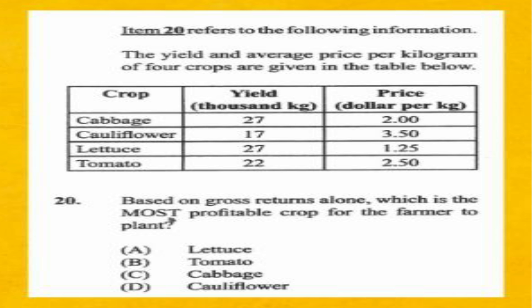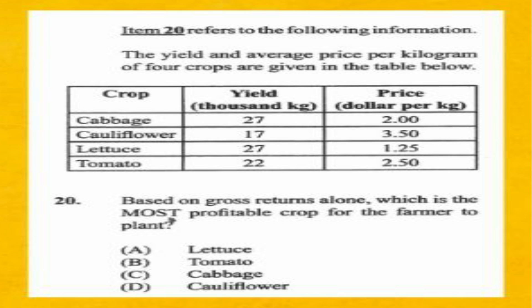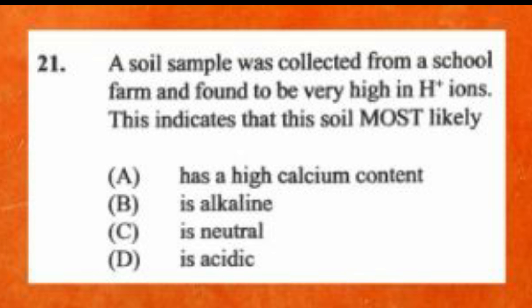Question number nineteen: total income minus total expense — the answer is A, net profit. Question number twenty refers to a table showing yield and average price per kilogram of four crops. Based on gross returns only, which is the most profitable crop? A) lettuce, B) tomato, C) cabbage, D) cauliflower. The answer is D, cauliflower. Gross return means income received before expenses are deducted.